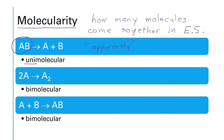The next two examples are bimolecular because there are two molecules on the reactant side. In the middle blue strip there are two molecules of A coming together, and in the bottom blue strip there are two different molecules, an A and a B. Since in both examples there are two molecules coming together, we call it a bimolecular reaction. It is also possible to have a termolecular reaction, meaning three particles all collide, but those are extremely rare because the collision frequency for a three-body collision is so low.